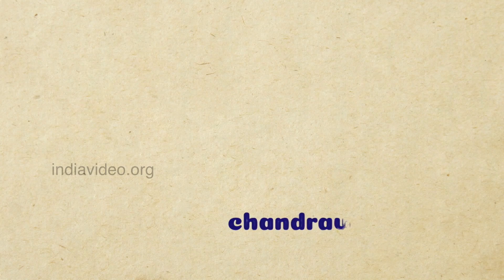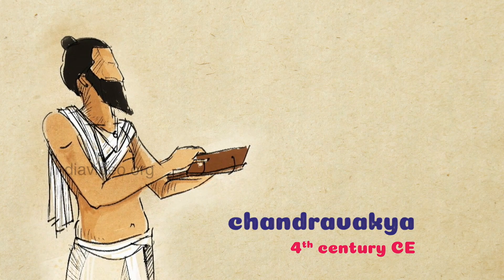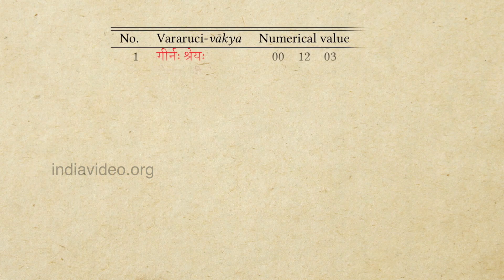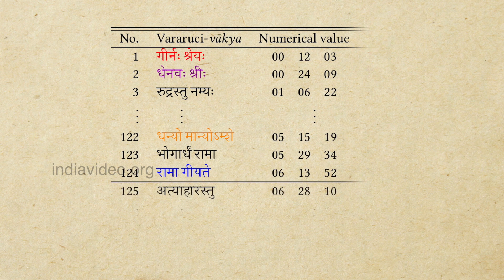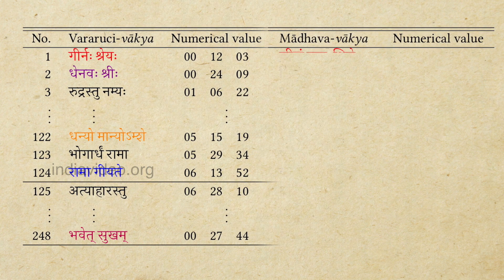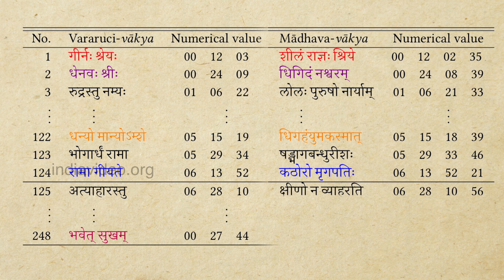The Chandravakyas are another set of examples where Kattapayadi is used. Written in the 4th century CE by Vararuchi, the Chandravakyas are a collection of sentences representing 248 numbers meant for calculating the position of the sun and the moon for any time of the year. These numbers were extensively used for computations of native almanacs and for predicting the position of the moon. Much later, in the 14th century CE, Madhava wrote down in his work Venvaroha a new set of sentences to encode similar numerical values to a much greater precision.